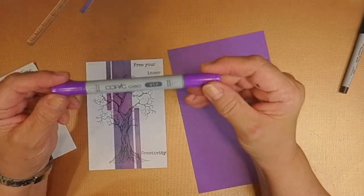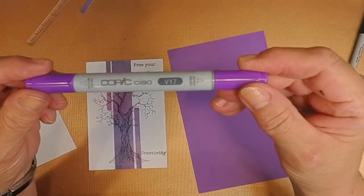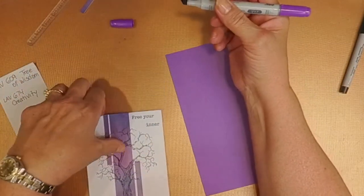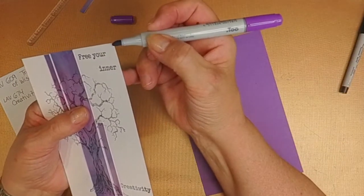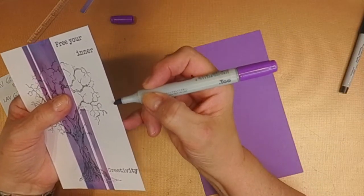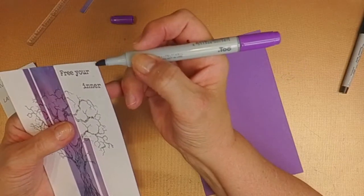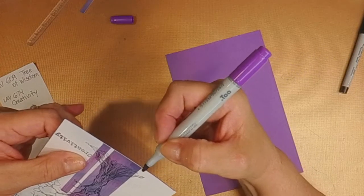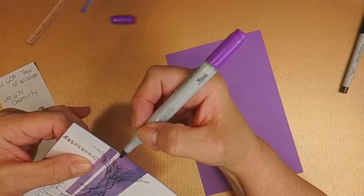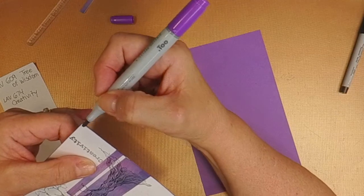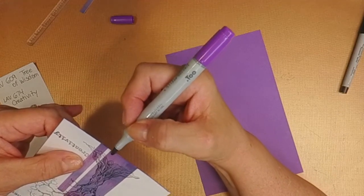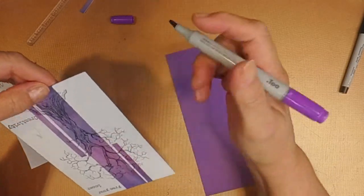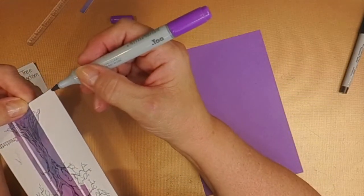I've taken a Copic marker, V17, which is actually called Amethyst. Using the chiseled edge, I'm going to carefully apply a little color to the edges of the card. This is actually going to make it look like I have a very thin mat underneath when I put it against a white paper.